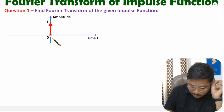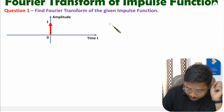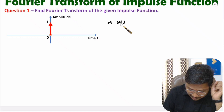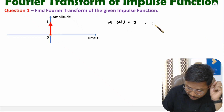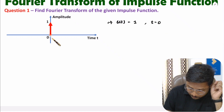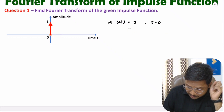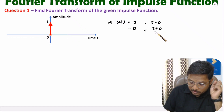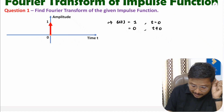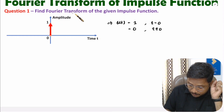Let me explain the first question. In question one we are given an impulse at time t equals zero. If we define the function, delta of t has magnitude one at time t equals zero, and this function has zero value for t not equal to zero.